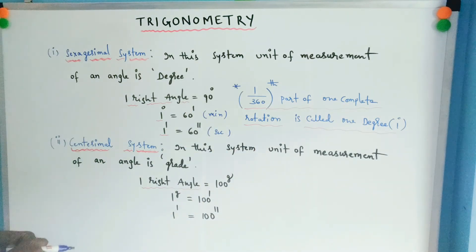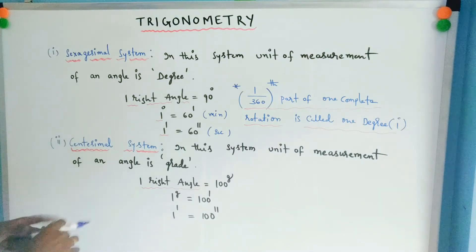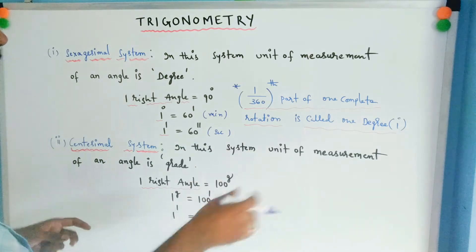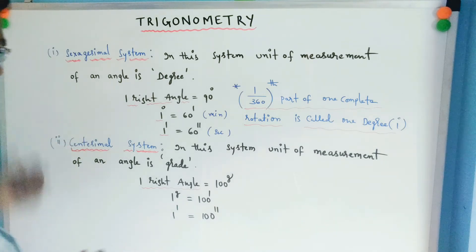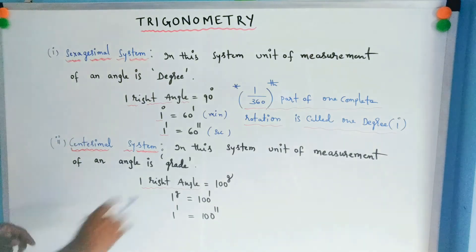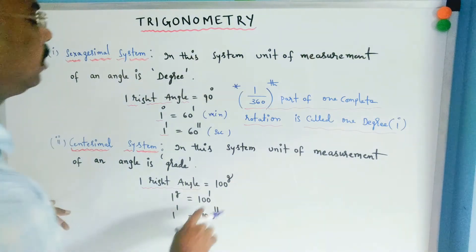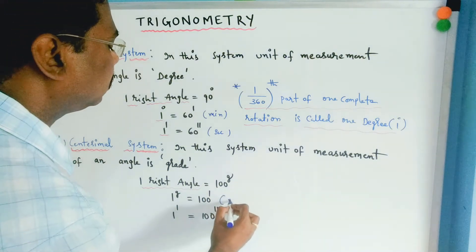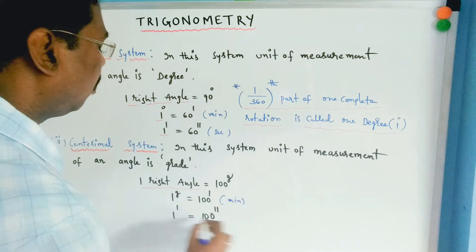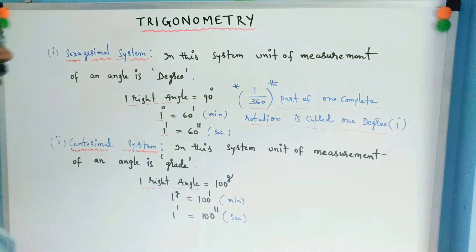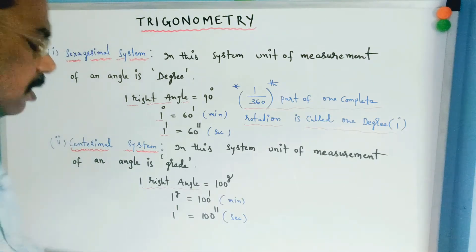Next, the centesimal system. In this system, the unit of measurement of an angle is grade. One three-hundred-and-sixtieth part of one complete rotation is called one grade. One right angle equals 100 grades, one grade equals 100 minutes, and one minute equals 100 seconds.